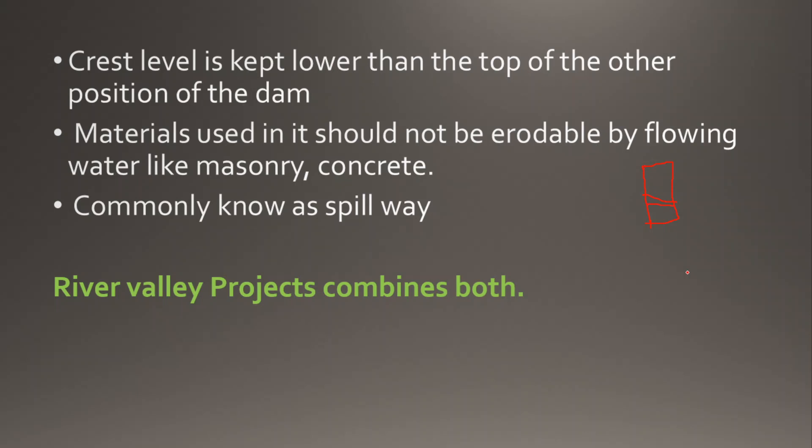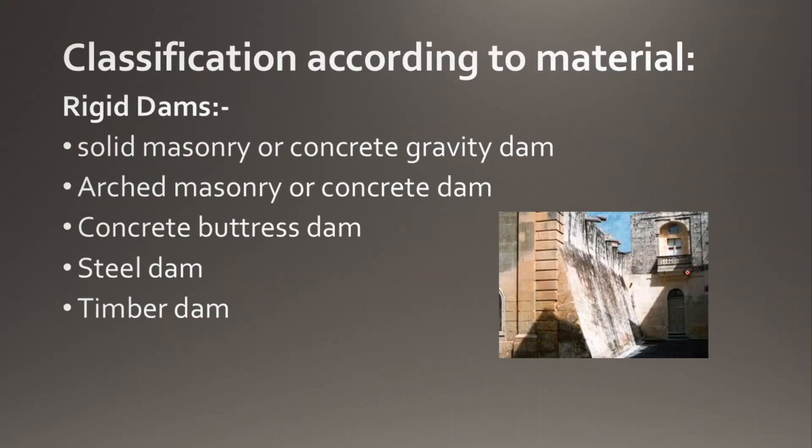The overflow control structure is commonly known as a spillway, which is located within the dam. River valley projects combine both overflow and non-overflow features. Recently, we have seen rainfall rates decrease and then increase again. Classification according to material: dams are classified into solid masonry or concrete gravity dams, and arched masonry or concrete dams.